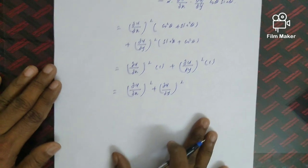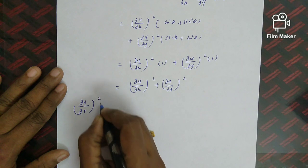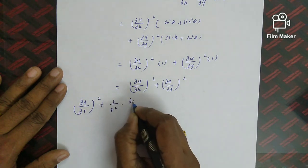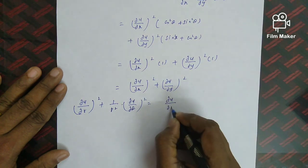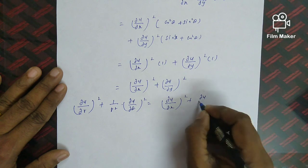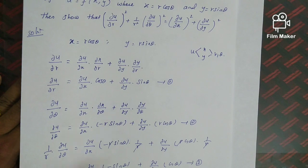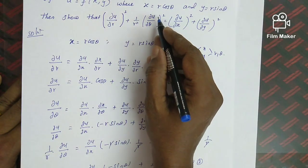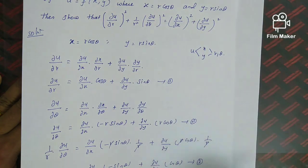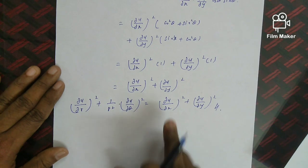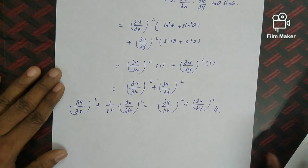So the result simplifies to (∂u/∂x)² + (∂u/∂y)². Therefore the left-hand side (∂u/∂r)² + (1/r²)(∂u/∂θ)² equals (∂u/∂x)² + (∂u/∂y)², which is exactly what we needed to show. Hence proved.